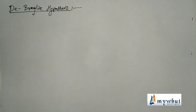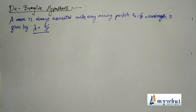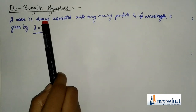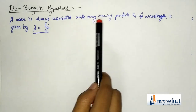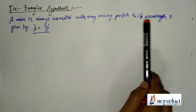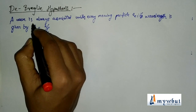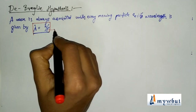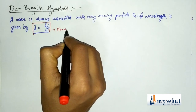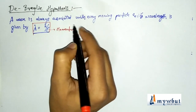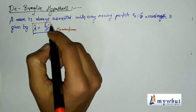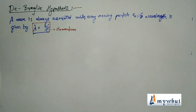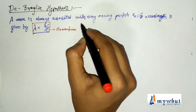De Broglie proposed that a wave is always associated with every moving particle, and the wavelength of that wave can be determined by the formula lambda equal to h by p, where p is the momentum of the particle and h is Planck's constant.